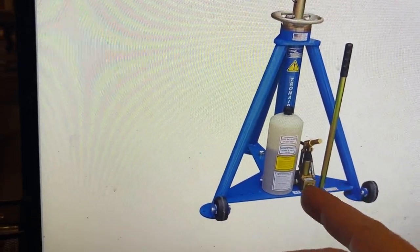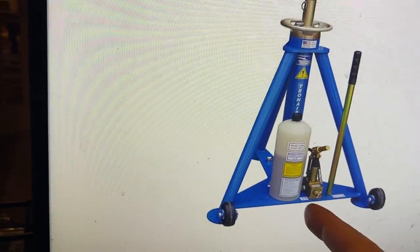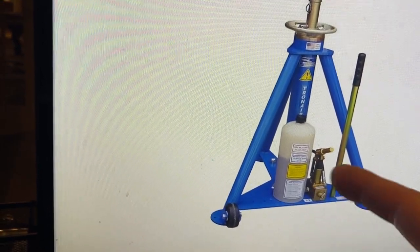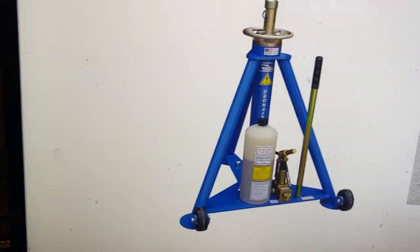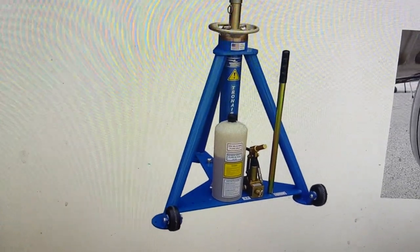If you want to let the jack down, you use the same jack handle and you put it on there and you turn this screw to the left or counterclockwise and that'll let the pressure relieve out of the jack. So they're pretty simple on the operation.